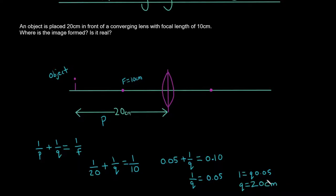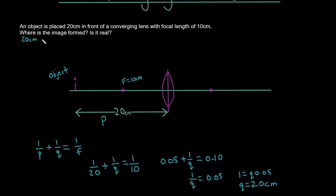Now that we've found Q, we know where the image is formed and whether it is real or not. Because Q is positive, we know that it forms on the right-hand side of the converging lens, and it is a real image. If Q had turned out to be a negative value, it would have formed on the left-hand side — on the same side as the object — and it would be a virtual image. So: where is the image formed? 20 centimeters to the right of the lens. Is it real? Yes, because it is a positive value.